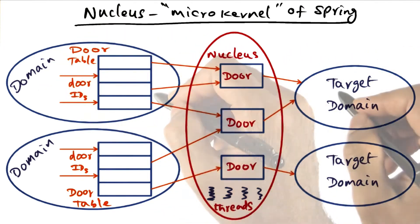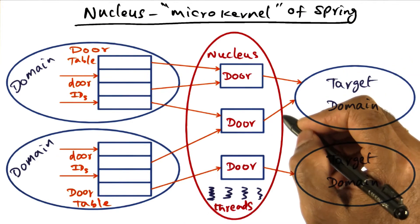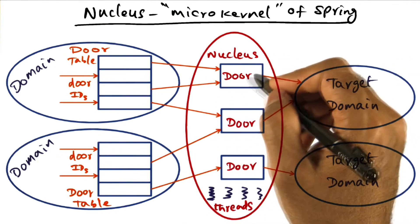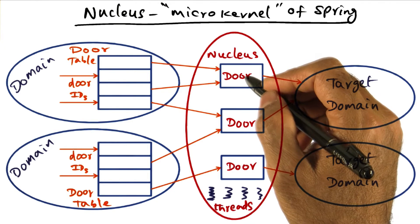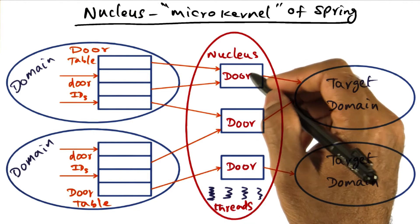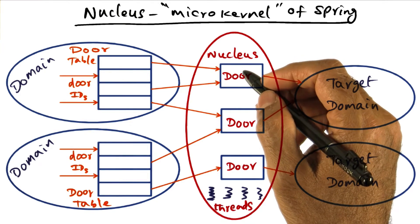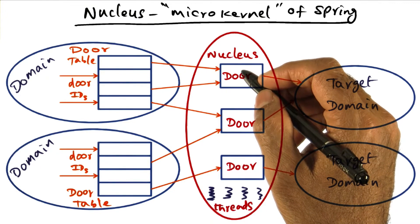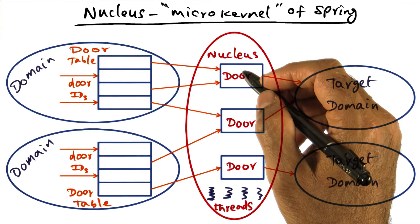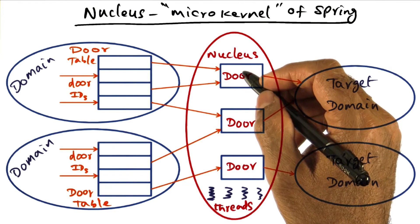If I'm a client, how do I get access to the entry points available in a target domain? The way I do that is similar to how you open a file in a Unix file system — you do an fopen, and when you do that, you get a file descriptor, which is a small integer that is a handle for you to access that file.